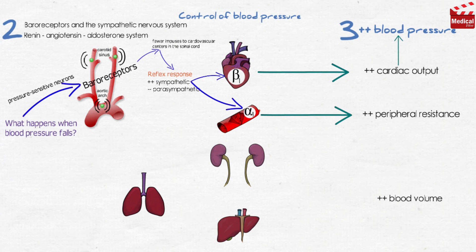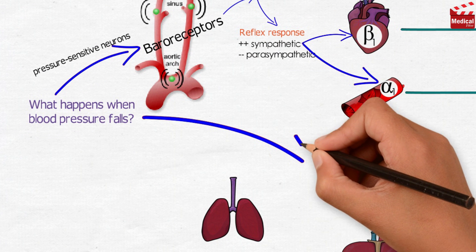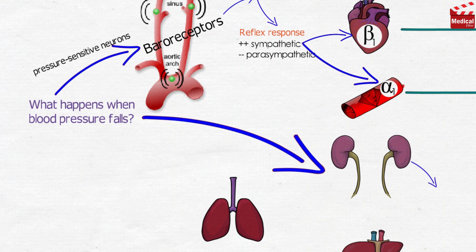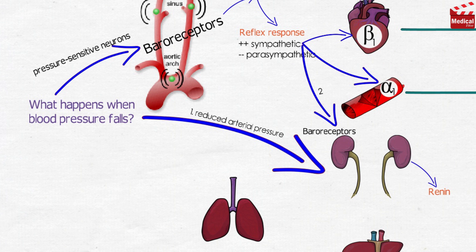The kidneys control blood volume. Simply, when blood pressure falls, the kidneys release the enzyme renin, leading to a series of events that increase blood pressure. There are also baroreceptors in the kidneys — they respond to reduced arterial pressure and to sympathetic stimulation of beta-1 adrenoceptors in the kidneys by releasing the enzyme renin. Low sodium intake and greater sodium loss also increase renin release.